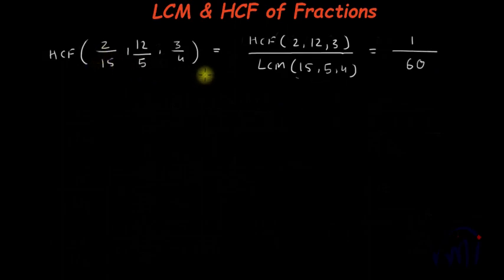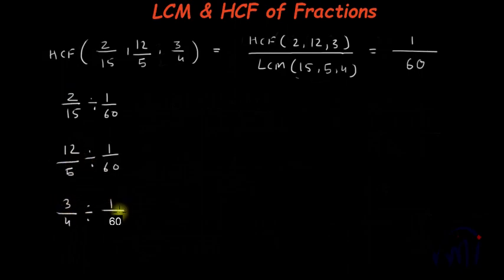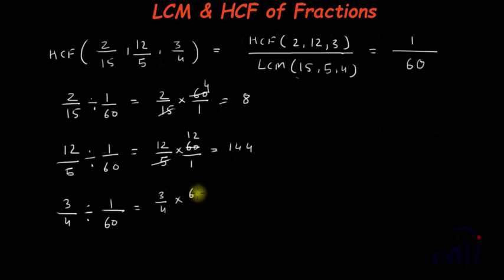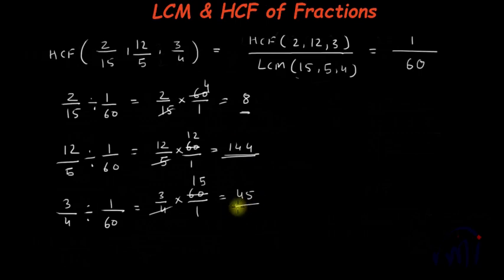This 1/60 will be a factor of all the given fractions, meaning it will divide 2/15, 12/5, and 3/4 completely. Verification: 2/15 divided by 1/60 equals 2/15 × 60 = 8. Then 12/5 divided by 1/60 equals 12/5 × 60 = 144. And 3/4 divided by 1/60 equals 3/4 × 60 = 45. In each case we are getting an integer as the result. So this is how we find the HCF of fractions. In the next few videos we are going to solve problems using these concepts.